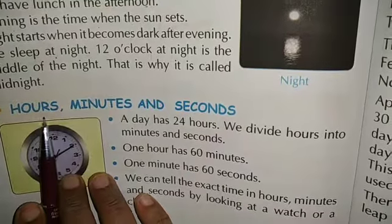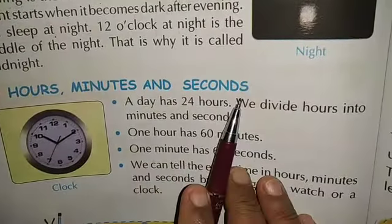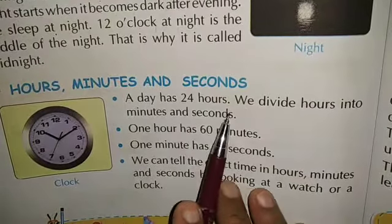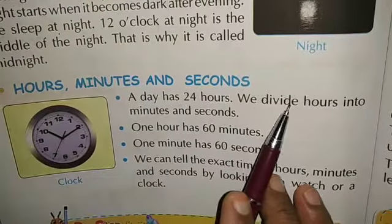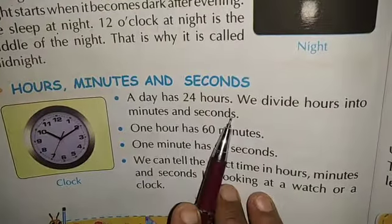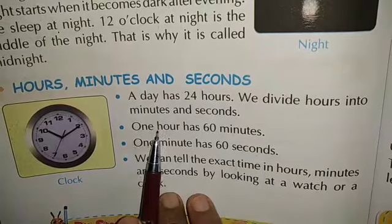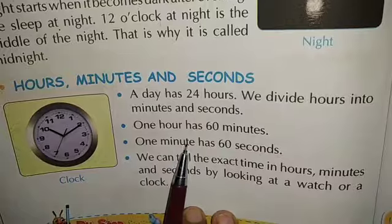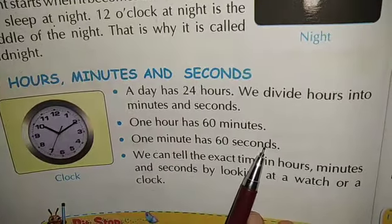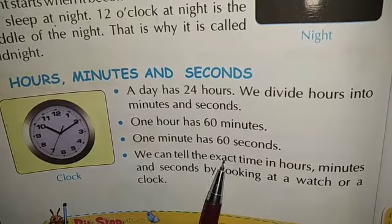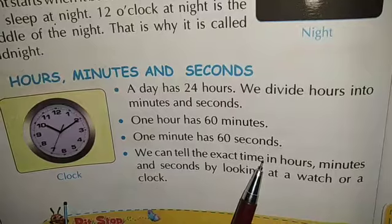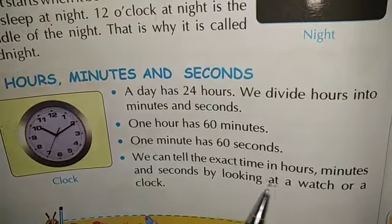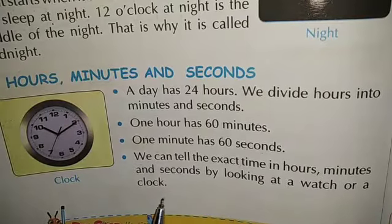Let us see hours, minutes, and seconds. A day has 24 hours. We divide hours into minutes and seconds: 1 hour has 60 minutes, and 1 minute has 60 seconds. We can tell the exact time in hours, minutes, and seconds by looking at a watch or a clock.